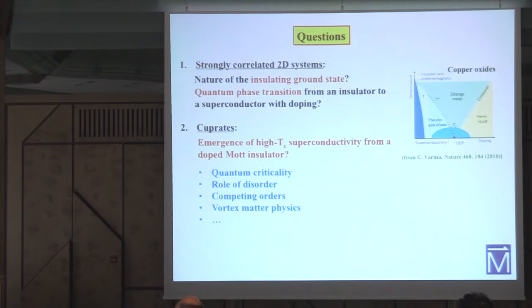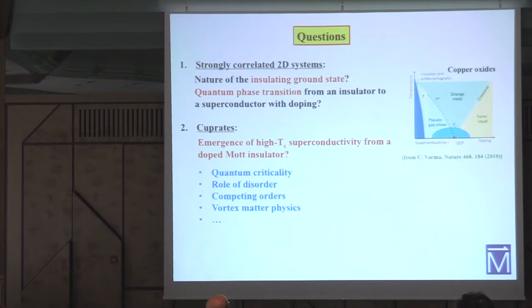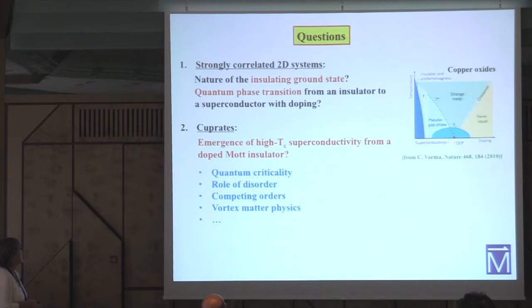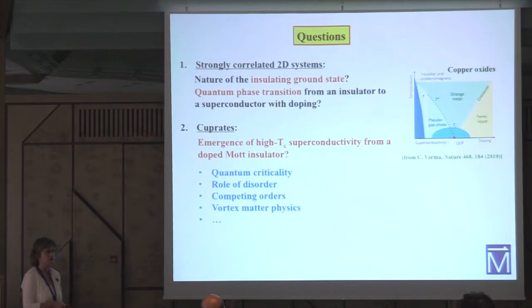Cuprates are just one example of a broad class of materials in this category, and the emergence of high-TC superconductivity from a doped Mott insulator has been a central issue in this field. Several speakers have already mentioned relevant issues such as quantum criticality, the role of disorder, various competing orders, and vortex physics.